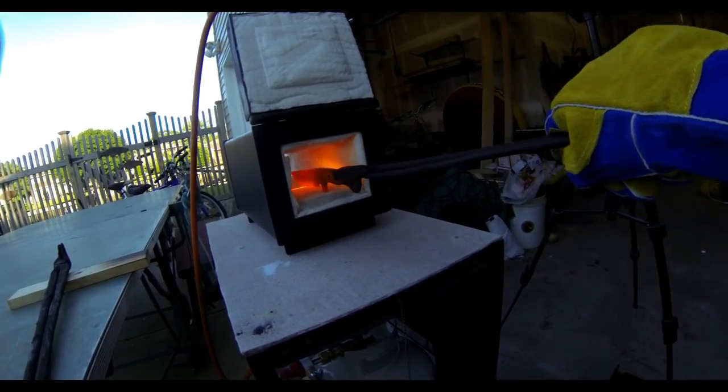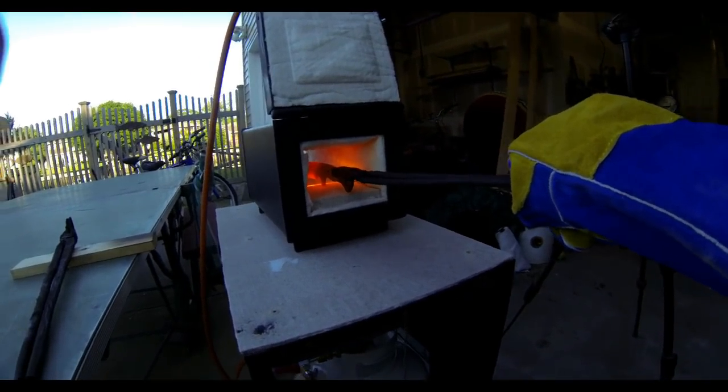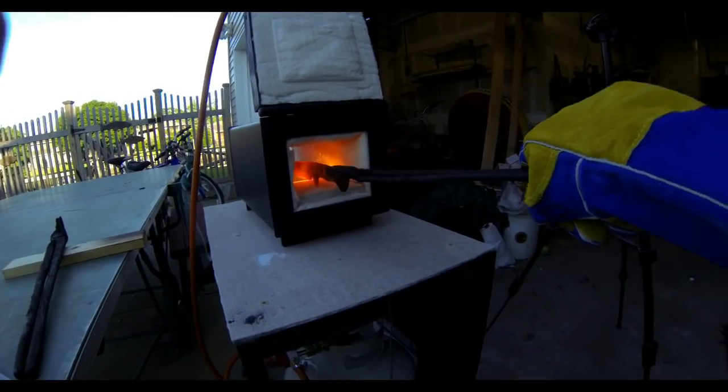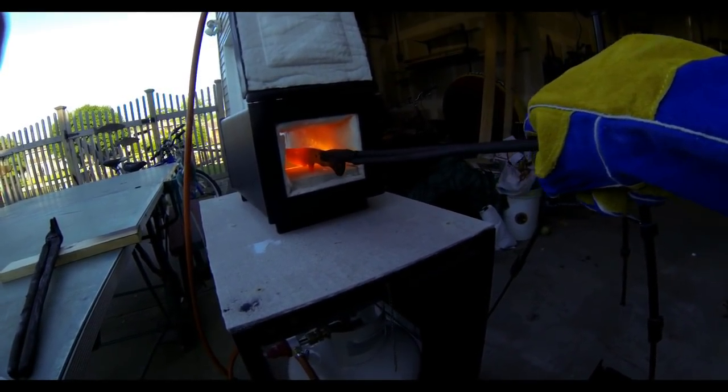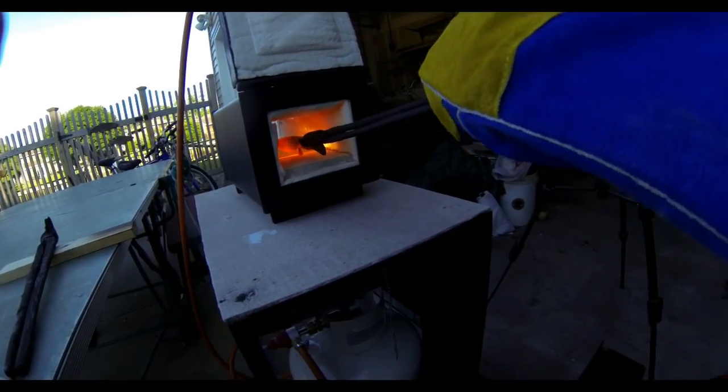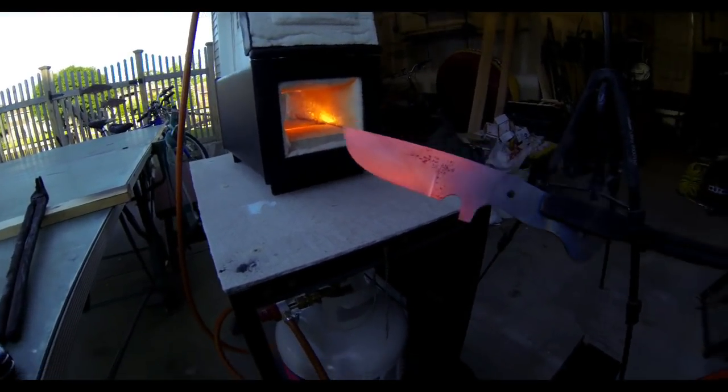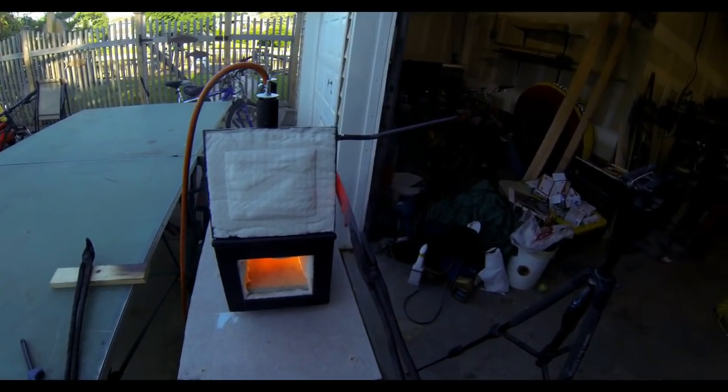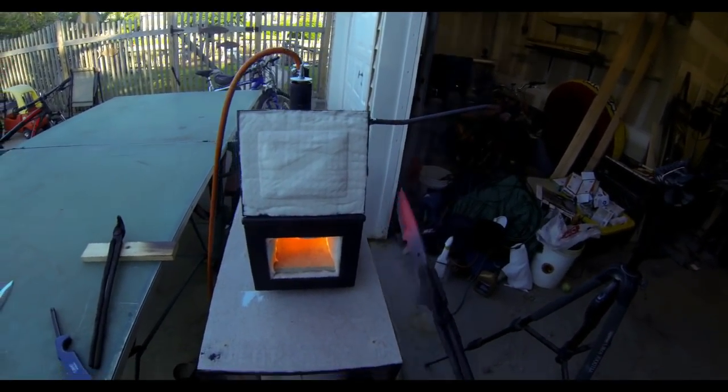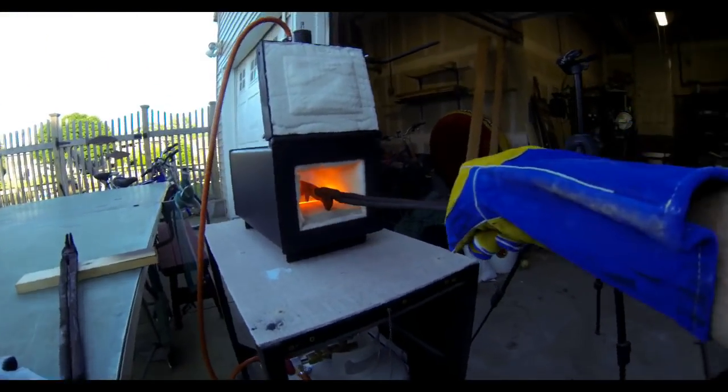The additional thing that I did was I put a magnet on the side of the forge door so that once I get the blade up to temperature, I can check that it's non-magnetic by just taking the blade and placing it right up against that magnet. If it doesn't stick, I know I've got it hot enough.